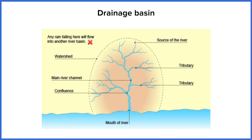Let's start by looking at some key terms. We'll start with the dotted line that runs around the outside of this diagram — this represents the edge of our drainage basin and it's called the watershed. In real life that would represent the top of a mountain or hill. Any water that flows on the right hand side of this dotted line ends up in our main river, and anything that flows on the left hand side ends up in a different drainage basin in a different river.